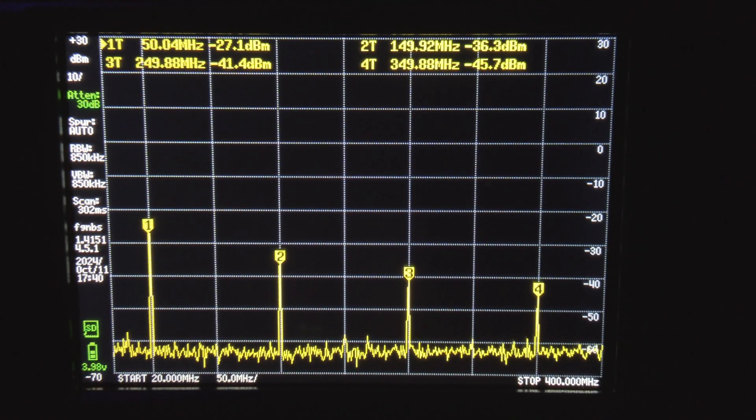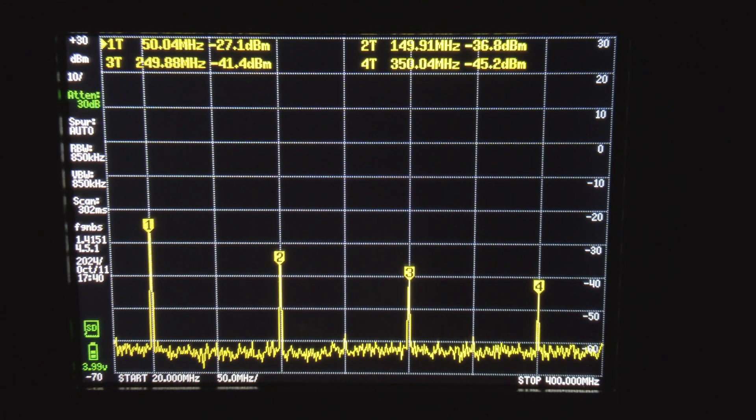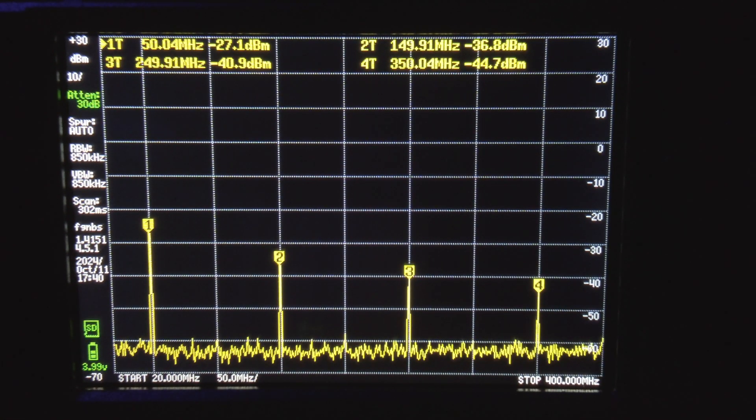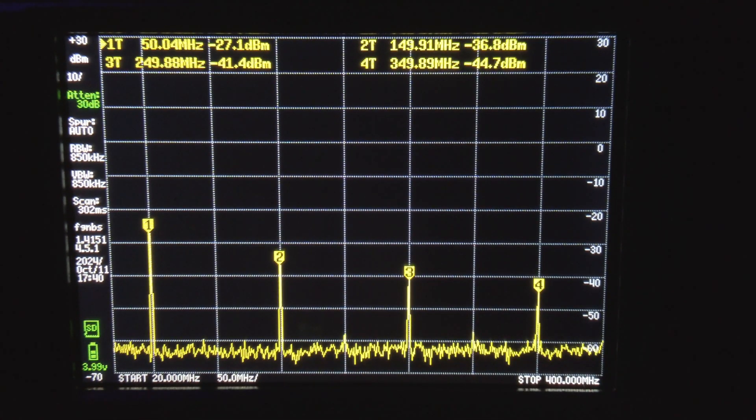So as we can see, we have our fundamental frequency at 50 megahertz, and we have spikes at 150, 250, 350, and so on. So now let's put the filter in line and see what happens to those spikes.